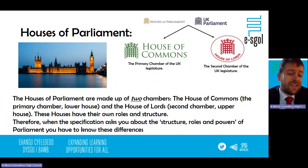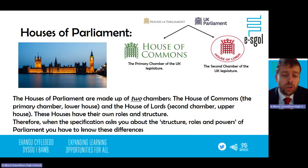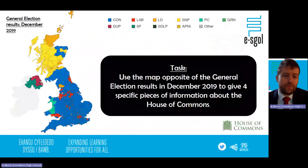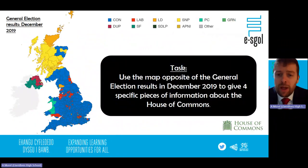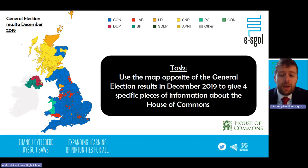When the specification asks you about the role, structure and power of Parliament, you've got to know the differences between the House of Commons and the House of Lords. Use this map showing the general election results from December 2019 to come up with four specific pieces of information about the House of Commons. Pause and see if you can think of four specific pieces.